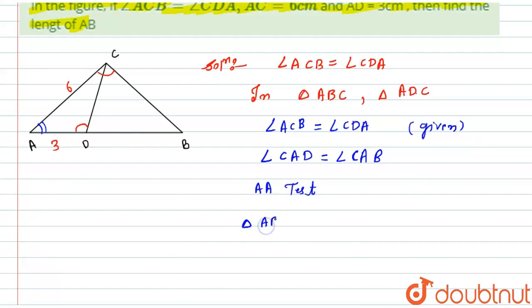And as we know that if the two triangles are similar then their sides should be in the proportion. So hence from this point I can write AC upon AD is equal to AB divided by AC.